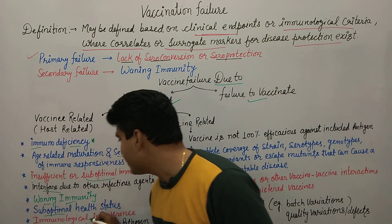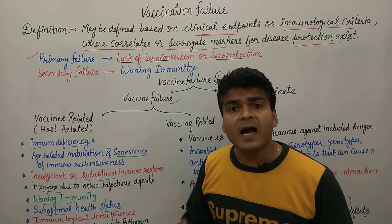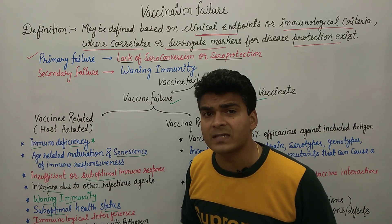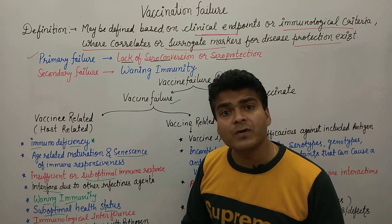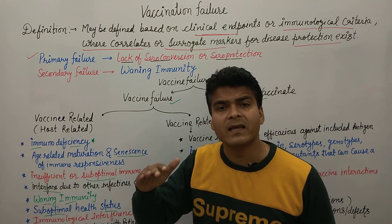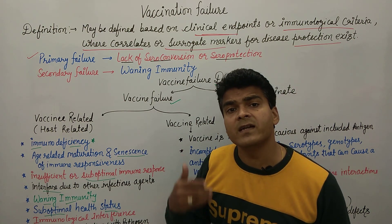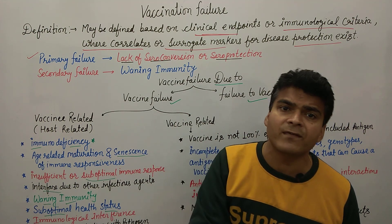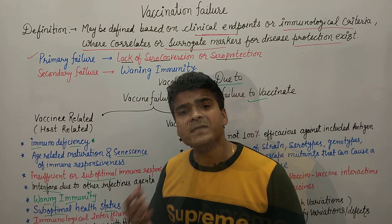And sub-optimal health status — the person may have anemia or low weight, or the person is very weak. Some children may be victims of malnutrition. In such children their health status is not up to the mark, they are not healthy, so the immune response that should be generated will not be generated. Even after re-vaccination, these children can get re-infected.